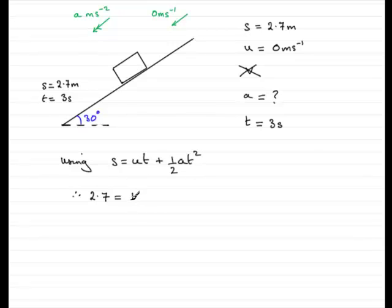Then we've got half times A - well we don't know A - times T squared. 3 squared, or 9 if you like. So all we need to do is half the 9. That's 4.5, so 4.5A.